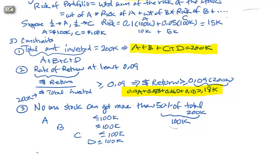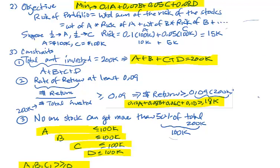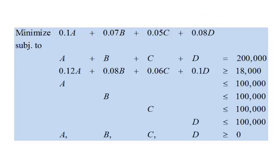Lastly, we need the non-negativity constraint as usual. Collecting the objective and all constraints together, here is the entire linear programming model: the objective minimizes risk, with the constraint that the total amount invested is $200,000, the rate of return requirement is met, there are limits on individual stocks, and non-negativity is enforced.